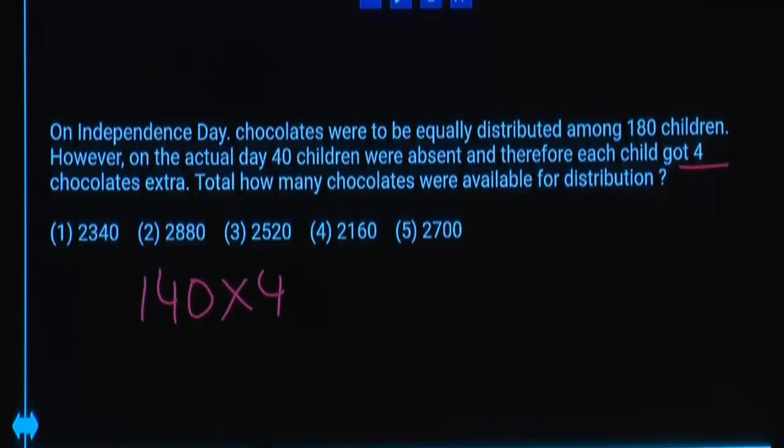These were actually supposed to distribute to how many students? 40. So if you divide this number with 40, you will get number of chocolates that originally planned to distribute to each student. Extra chocolates distributed was 140 into 4. Those were actually supposed to distribute to 40 students. Number of chocolates per person actually planned was this much.